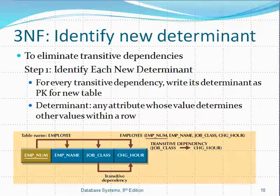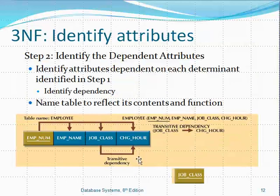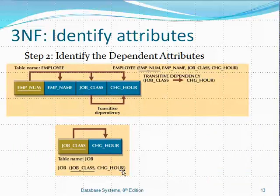The first step is to identify the new determinant. For a transitive dependency, the new determinant is the element that determines other elements — in our case, job class. Then we assign the attributes determined by this new determinant, which is the charge hour attribute. We may name this new table 'Job,' which will have two attributes: job class and charge per hour.